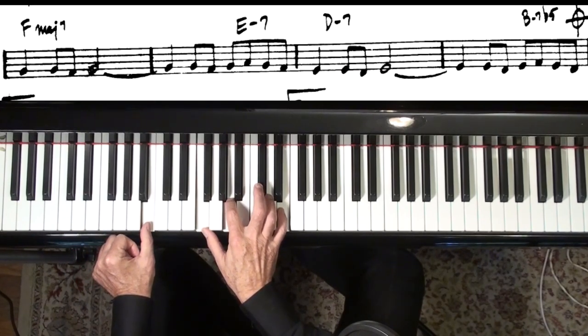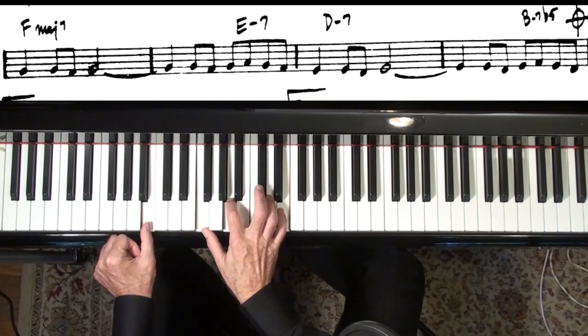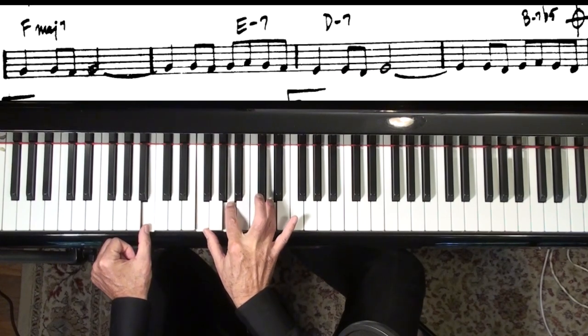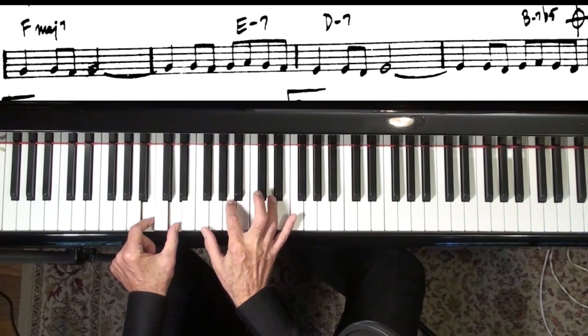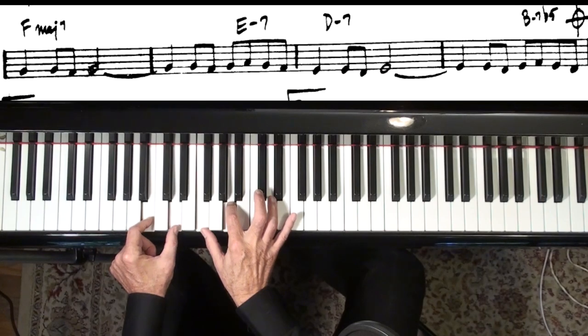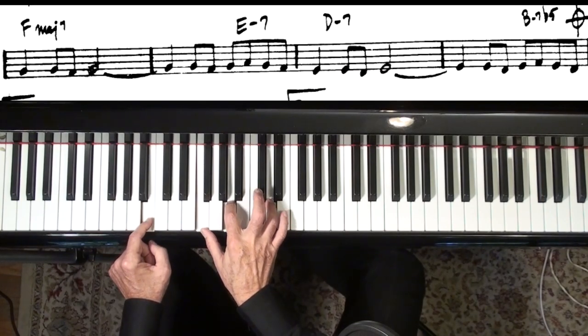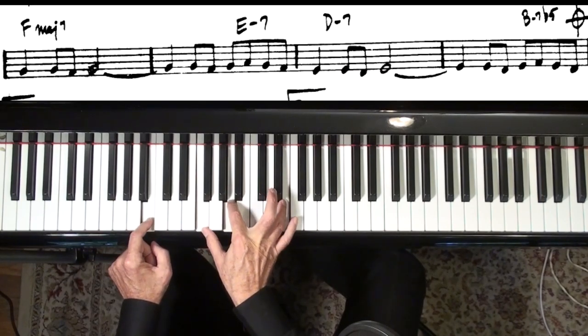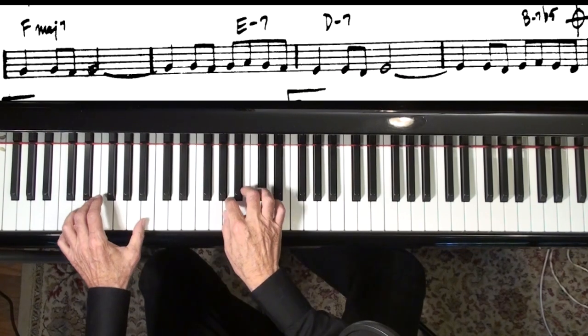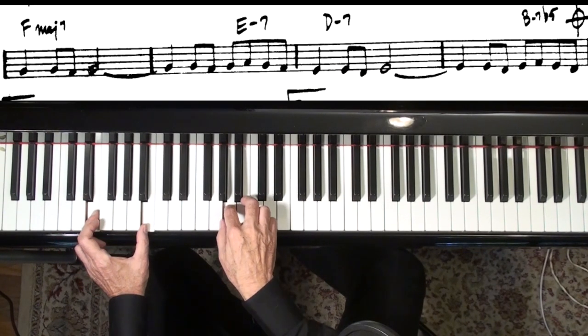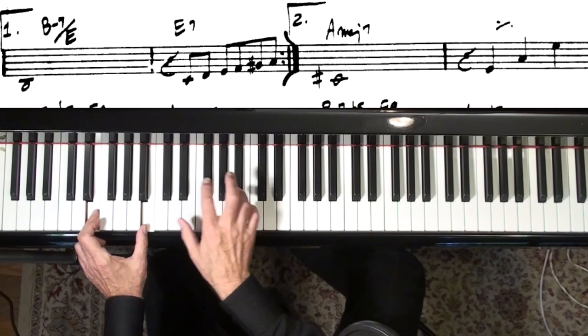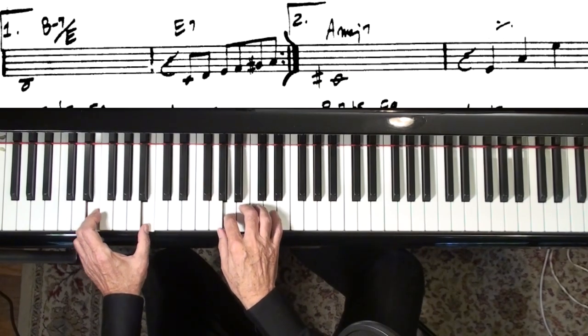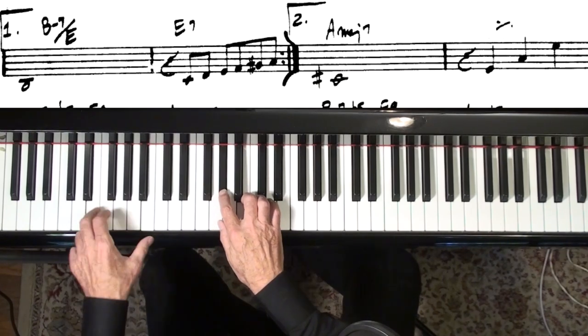And you don't have to change much to get to that B minor 7 flat 5. The chord is actually this, but the melody note is up here. And we're getting pretty low here, so I want to be careful. I don't want to play too thick of a chord down here.